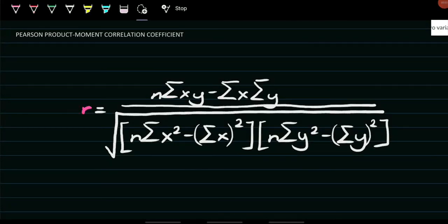Pearson Product Moment Correlation Coefficient. Again, we are using this formula developed by Mr. Karl Pearson to measure the strength and the direction between two variables. So the formula again is r is equal to n, or the size of the sample, times the summation of xy minus the summation of x times the summation of y, all over the square root of these terms.